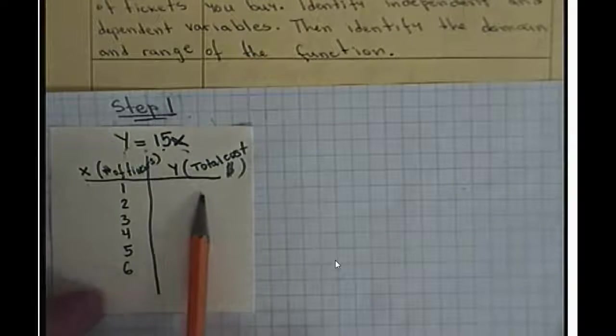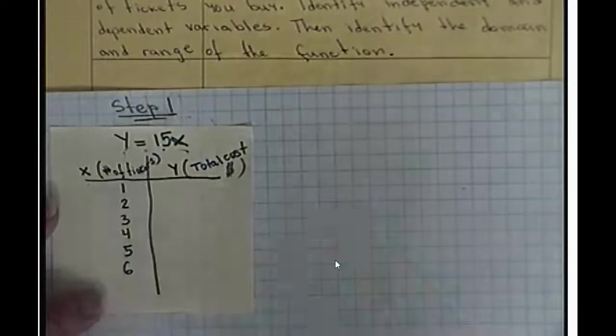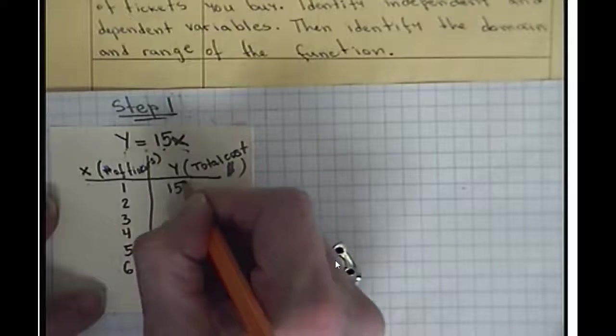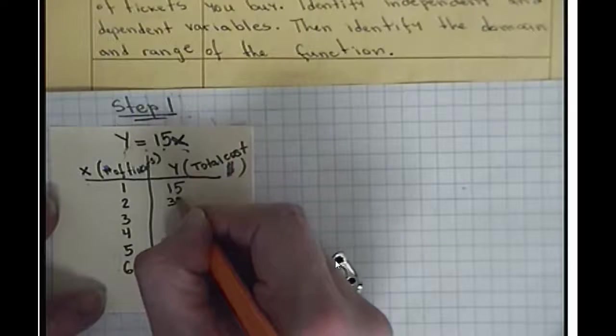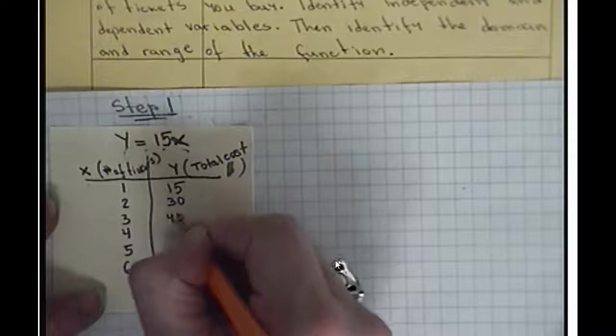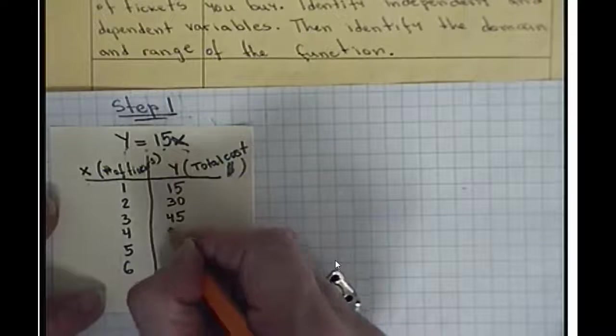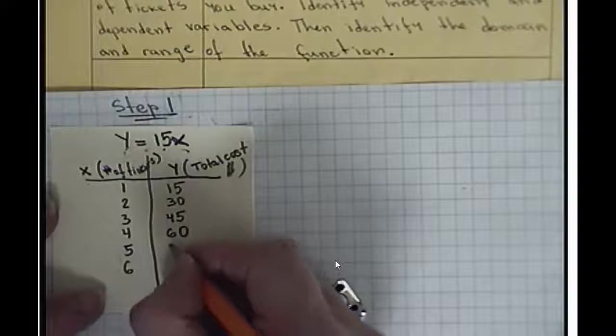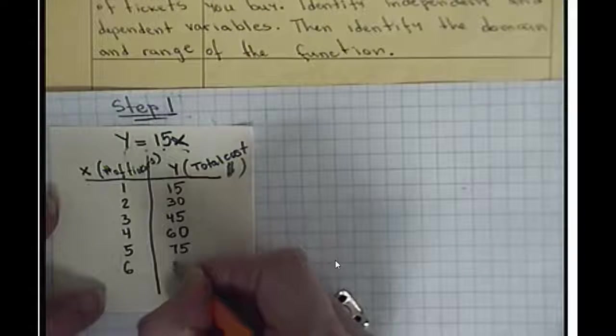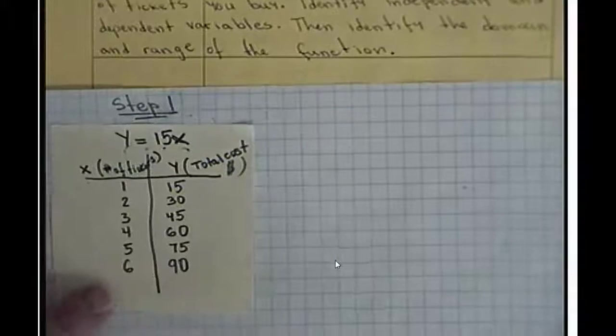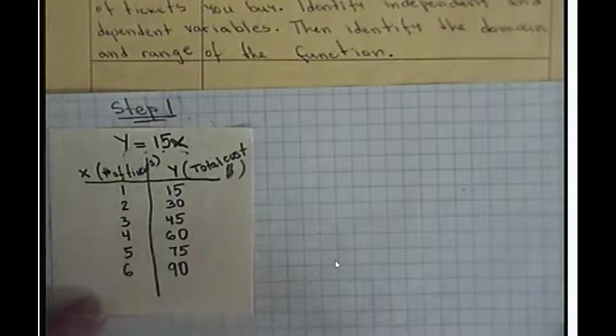Now, how much are we going to pay? Well, that will depend on the ticket's number. So, if I have 1 ticket, I pay $15. If I have 2 tickets, I pay $30. 3 tickets, $45. 4 tickets, $60. 5 tickets, $75. And 6 tickets, $90. So, this is my table. This is how I set up the problem.